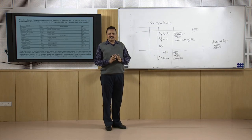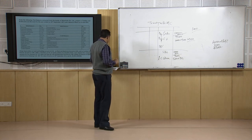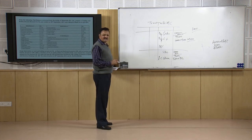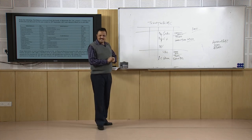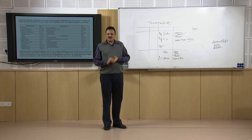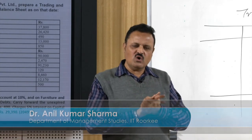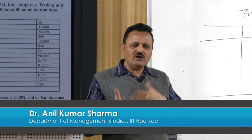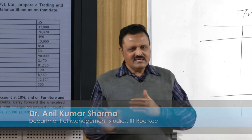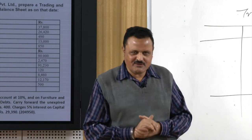So far we have covered approximately 15-16 adjustments, which is an almost exhaustive list. Now that we know how to deal with all adjustments and maintain the double entry system for this additional information, we will complete the preparation of financial statements practically in the next lecture. Thank you very much.